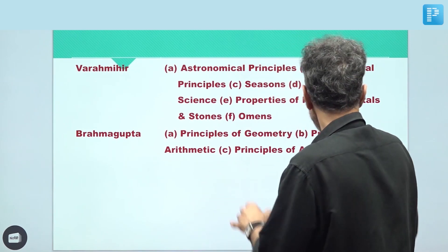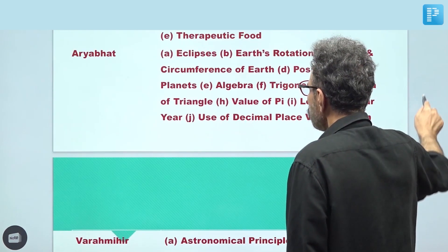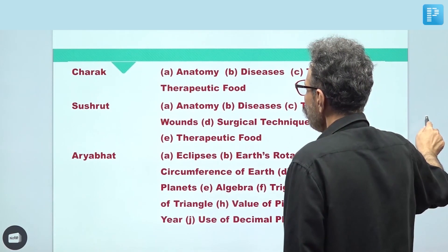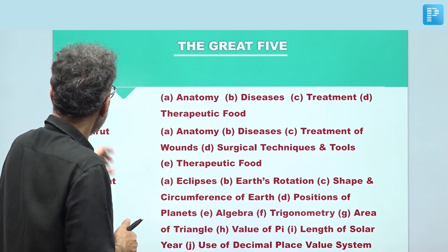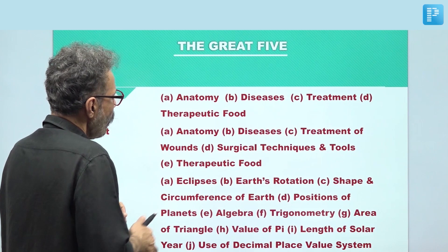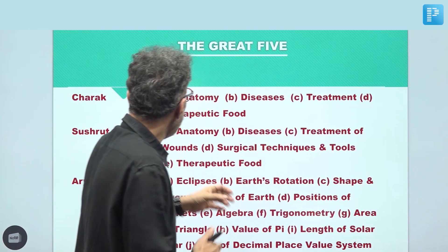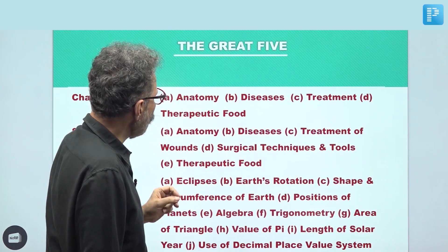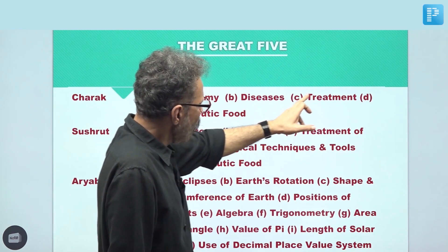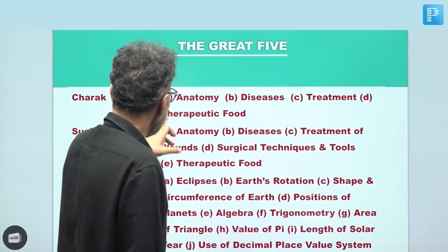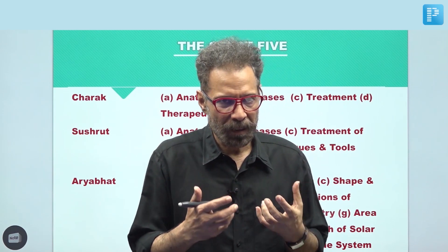This presentation depicts the details of their contributions. In the case of the first, Charak — he wrote a book, Charak Samhita. In Charak Samhita, there is a comprehensive description of: A, anatomy, that is human anatomy; B, diseases, human diseases; C, treatment of diseases; and D, therapeutic food, meaning food having therapeutic character.